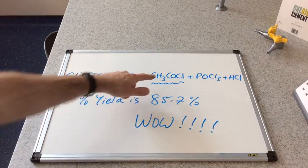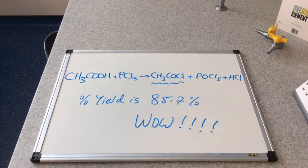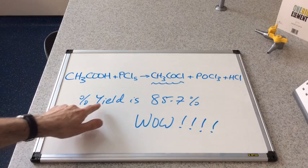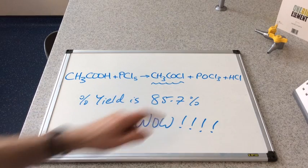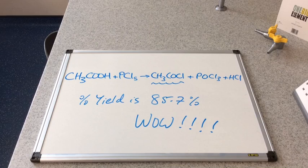So we've made the CH3COCl, we've made some POCl3 and some HCl. And look, the percentage yield is 85.7%. That's amazing. It's absolutely brilliant, isn't it?